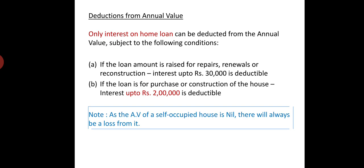There are two conditions. First, if the loan is used for purchase or construction of the house property, the deductible amount is up to Rs. 2 lakh. That is the limit — it is generally 2 lakh because a home loan is almost always raised for constructing, acquiring, or purchasing a house property.